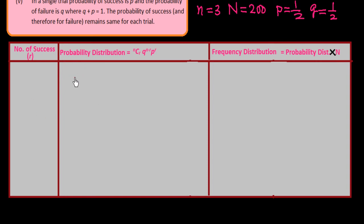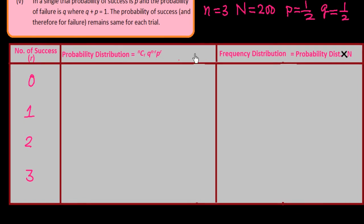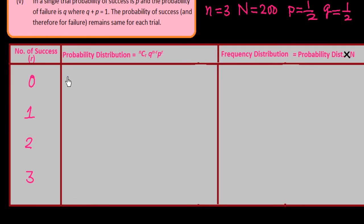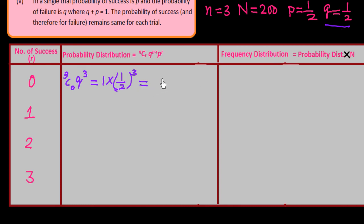Since there are three coins, we may get 0, 1, 2, or 3 heads. The number of successes is denoted by small r. If we have no head, then the calculation is 3 combination 0, Q power 3, P power 0. This gives us 3C0 equals 1, and Q is 1 by 2, so 1 over 2 to the power 3, which equals 1 over 8.